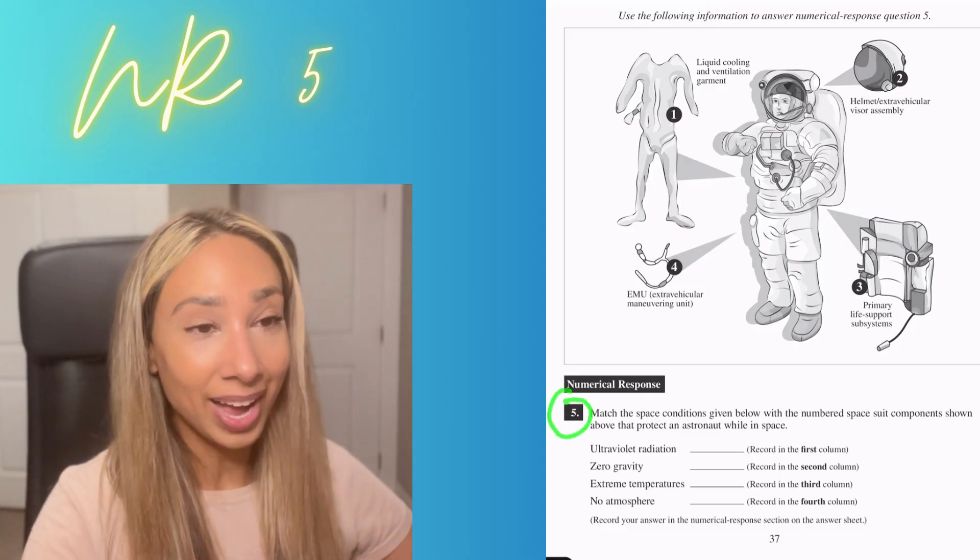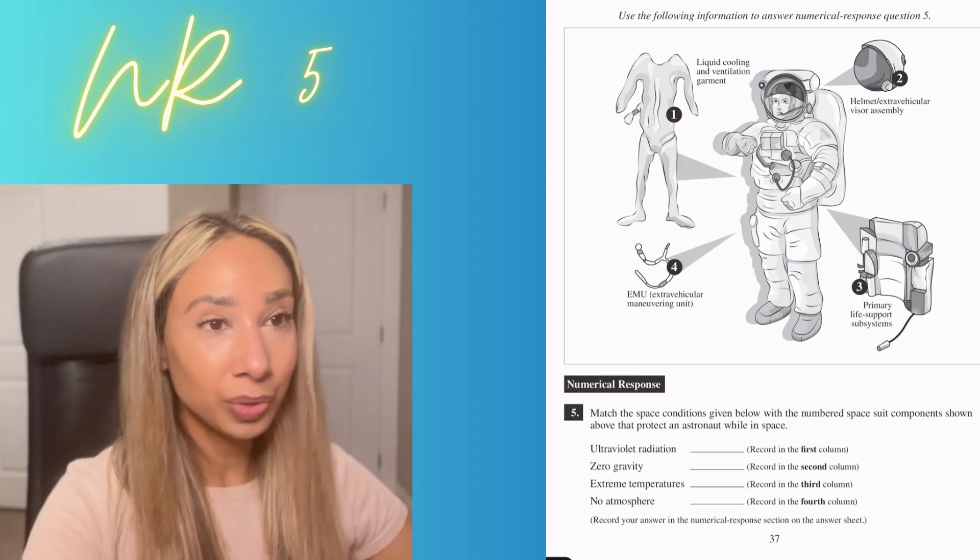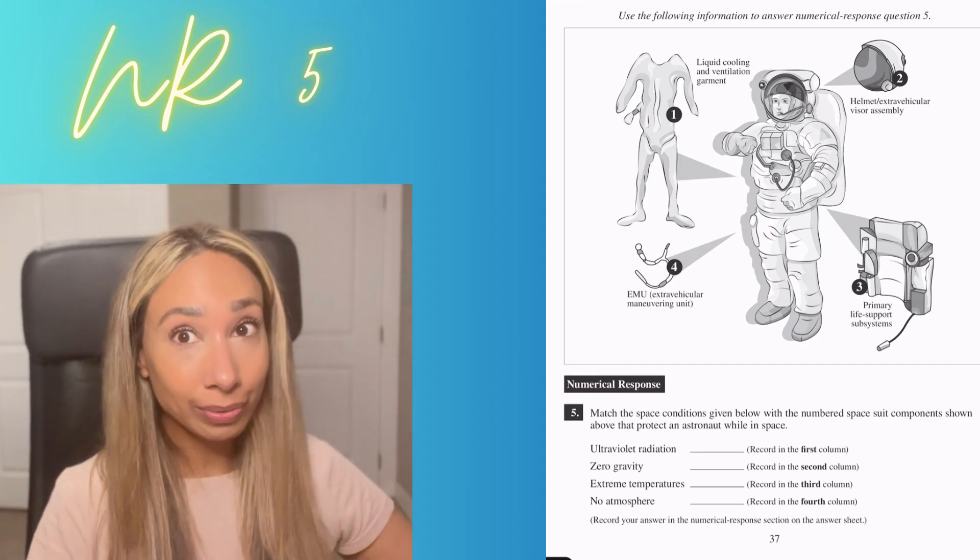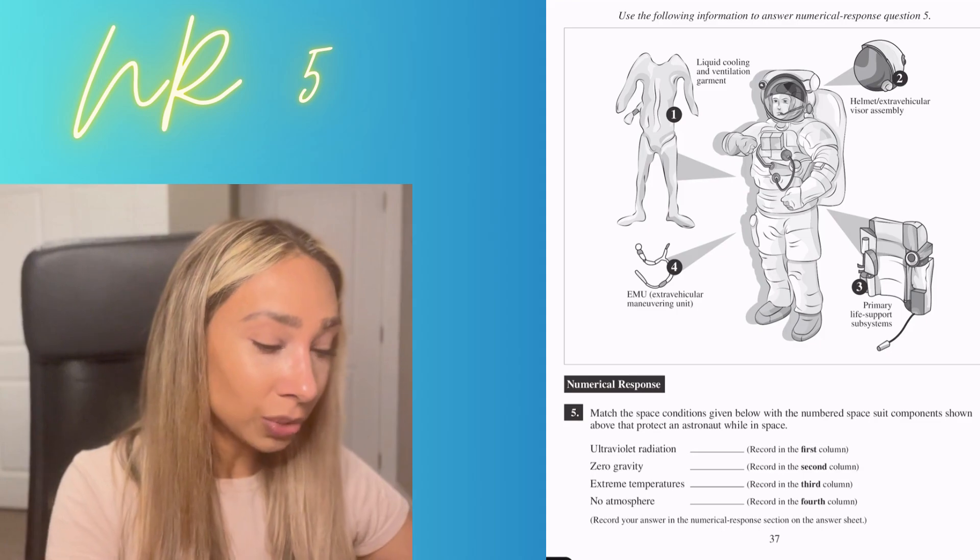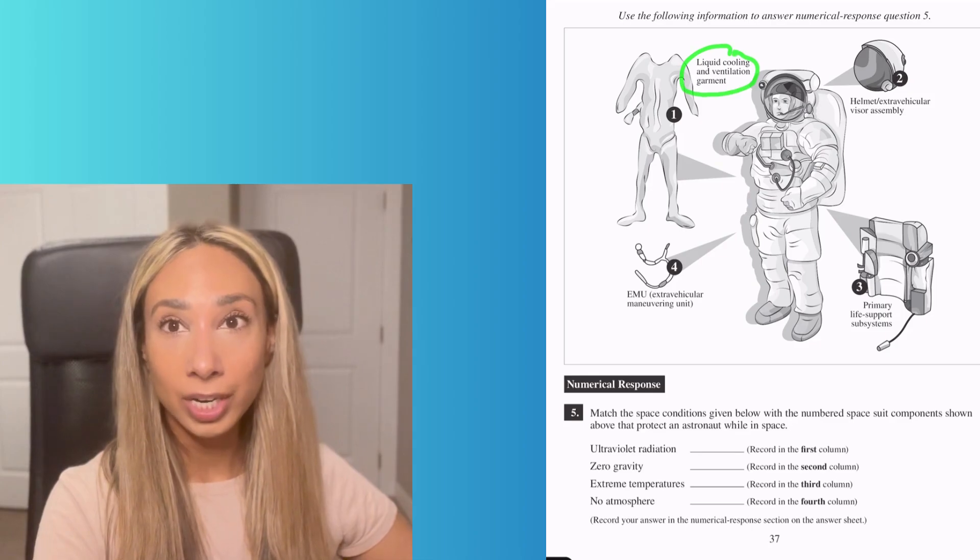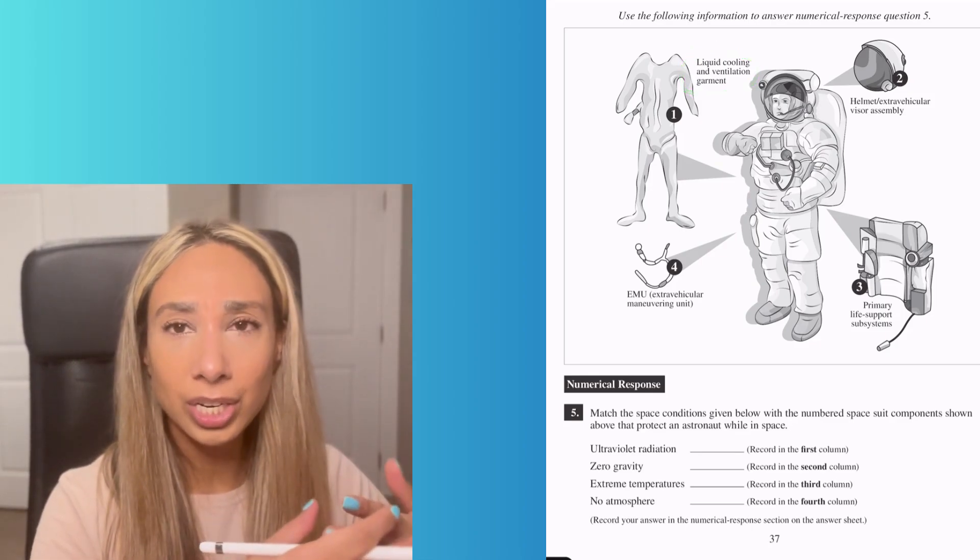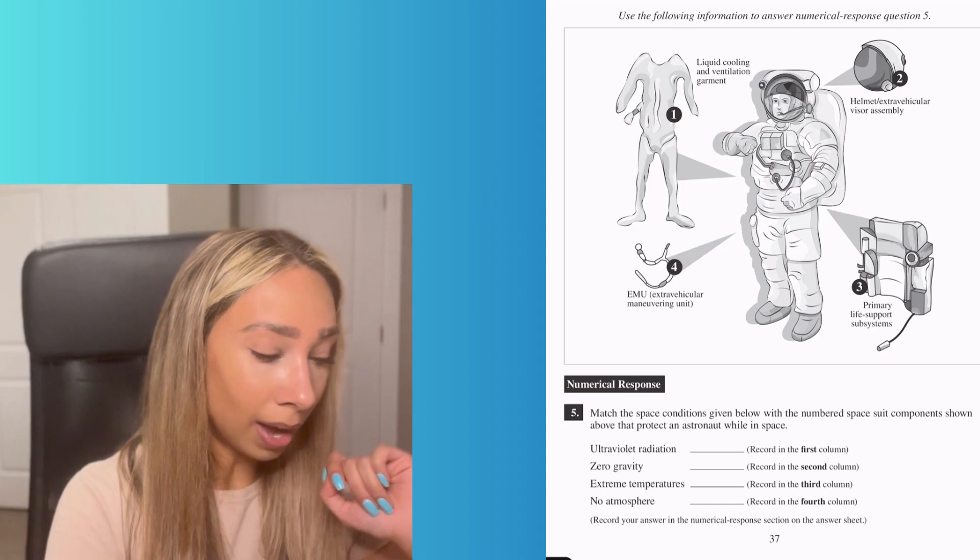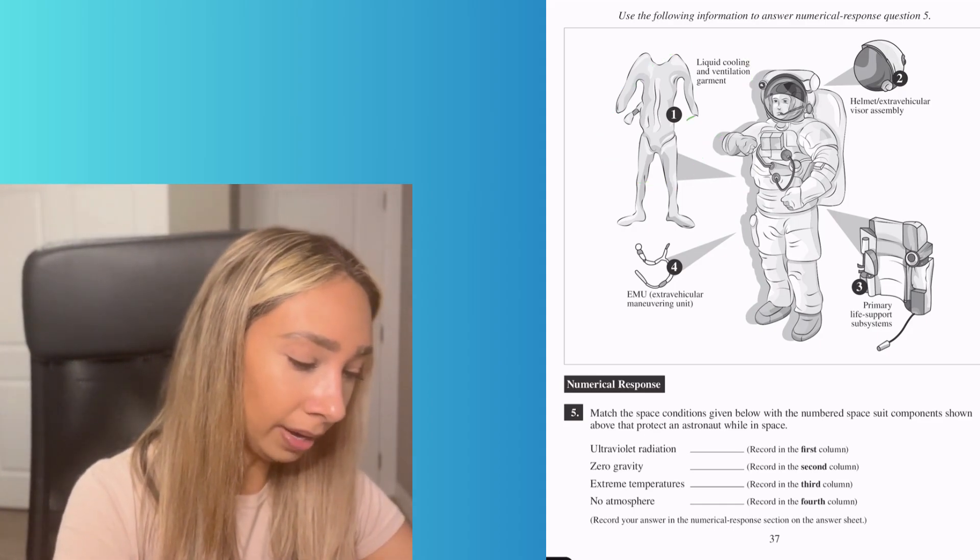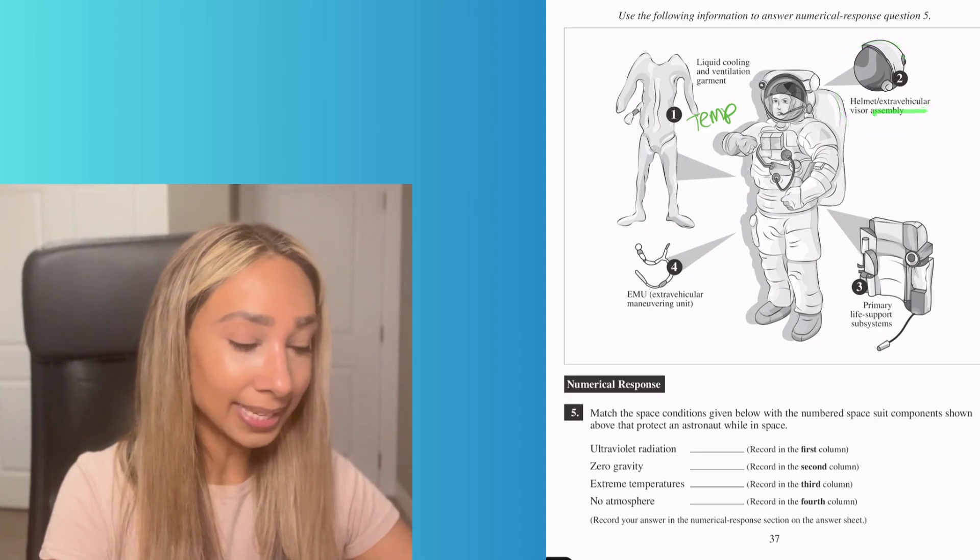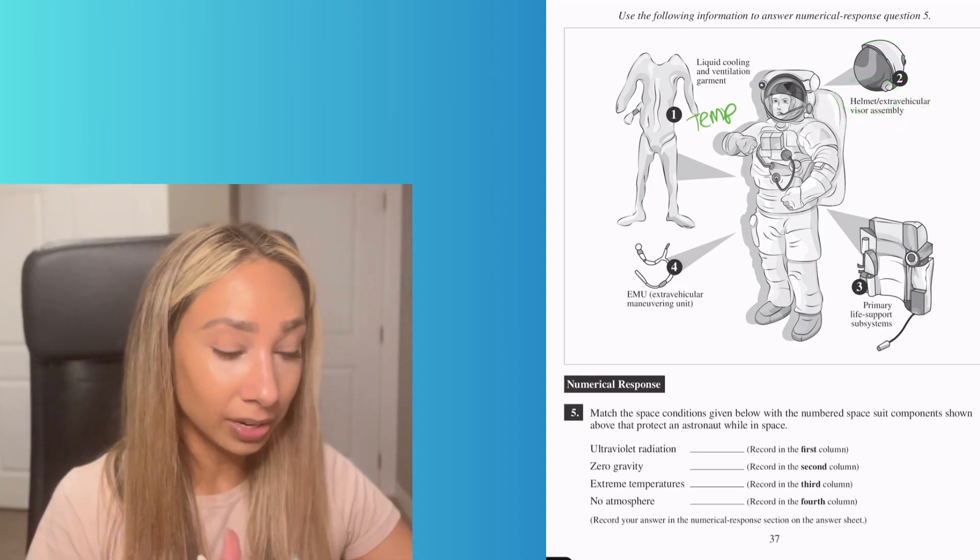Numerical response number 5. This one can be tricky if you're not sure what the equipment's going to be, but they give us clues in the names. Our first one is a liquid cooling and ventilation garment. If I'm thinking of liquid cooling and ventilation, we're thinking of temperature. That's going to maintain our body temperature.